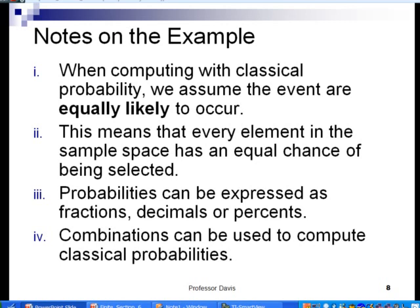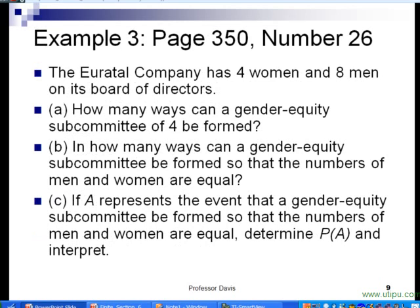Let's follow up with a few notes. When computing classical probability, we always have to assume that the events are equally likely to occur, and there's lots of situations where that's really the truth. This means that every element in the sample space has an equal chance of being selected. Probabilities can be expressed as proper fractions, as decimals, or percents. And combinations can be used to compute classical probabilities. That's a common counting technique we can use.